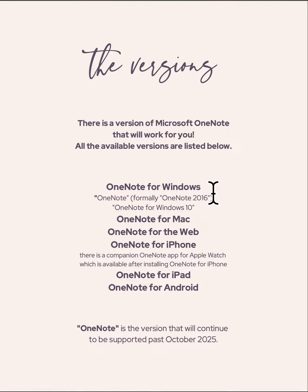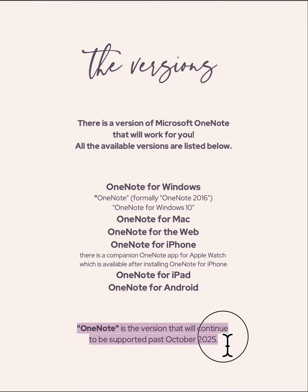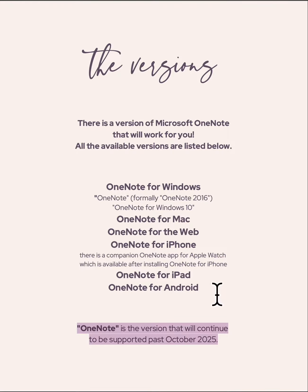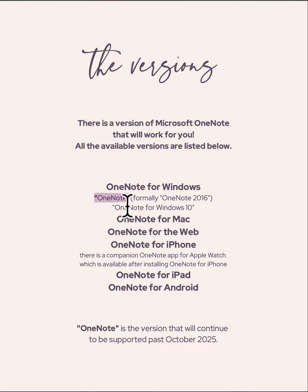There's OneNote for Windows — this is the version that formerly was called OneNote 2016. Down here, OneNote is the version that will continue to be supported after October 2025, which is nearly three years away — all of 2023, all of 2024, and most of 2025. All of these versions will exist, but this OneNote, which used to be OneNote 2016, will continue to get support from Microsoft.